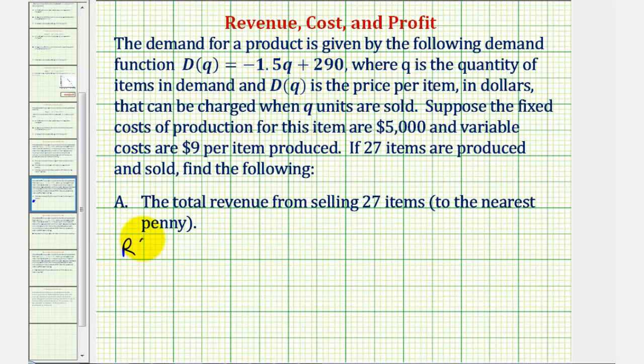So R of Q would be equal to the quantity times the price. The price is D of Q, so we can write this as Q times D of Q, or just Q times the quantity negative 1.5Q plus 290.